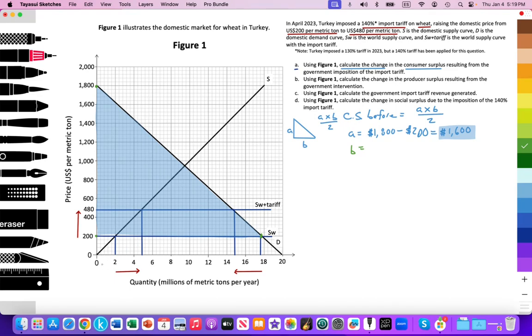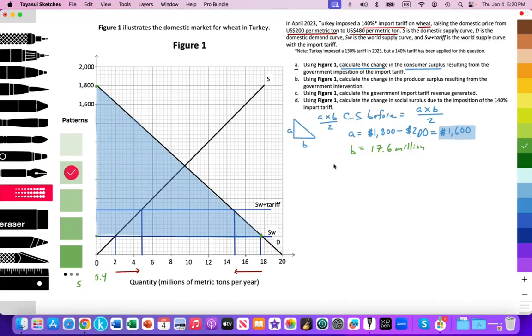I want to figure out what's the value of each of these intervals. I have 2 million divided by 1, 2, 3, 4, 5 intervals. So we're going up by units of 0.4. Here we have 16, 16.4, 16.8, 17.2, 17.6. So here we have 17.6 million. Perfect.